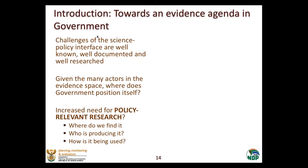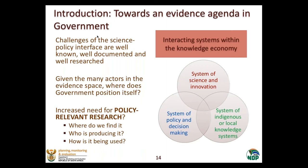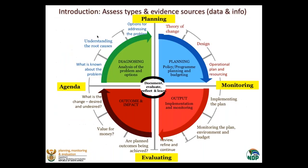There's always been a bit of a challenge around policies — around the development, implementation, and the science behind it. Evidence is required, but where does government fit in within this evidence space? There is an increased need for policy relevant research, but where do we find it? Who is producing it? And how is it being used? Within the knowledge economy, there are three systems: that of science and innovation, that of indigenous or local knowledge systems, and then the system of policy and decision making — and that's where we are.